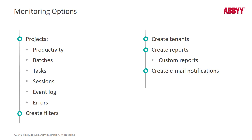You can look at a project's productivity. You can get a batch view and see all the active batches, active tasks, and active sessions. You can look at an event log and look at errors. With everything in the Administration and Monitoring Console, whether it's a report or a screen you're looking at directly, you can create filters — such as a date filter or filtering on a specific project — so you're looking at just the data you need.